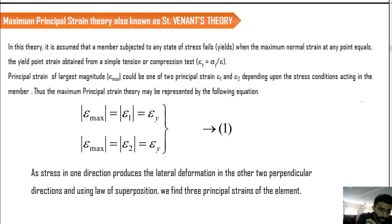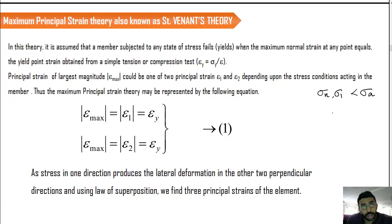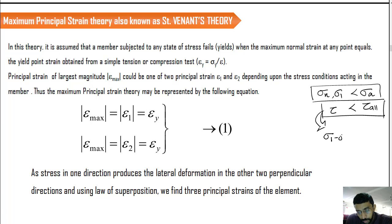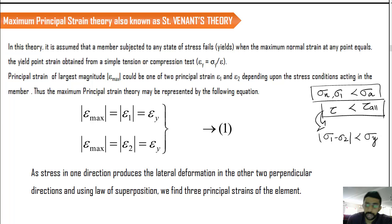We learned that in order to have a safe design, the maximum normal stress sigma_1 has to be less than the allowable value, and the maximum shear stress developed should be less than the tau allowable value. This was the maximum normal stress theory, and this was the maximum shear stress theory. We have rewritten the maximum shear stress theory in terms of normal stress as sigma_1 minus sigma_2 should be less than sigma yield.